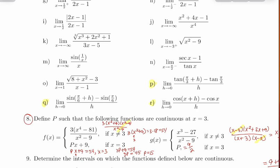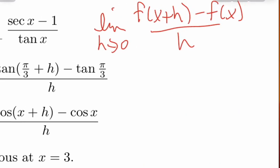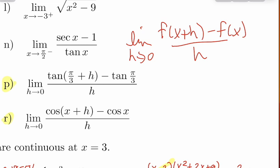You might recognize those, because the easiest way to do P, Q, and R is to recognize the formula: the limit as h approaches zero of f of x plus h minus f of x over h. Can anybody tell me what that limit is the same as? This is the derivative. So you should never do P, Q, and R using a limit. We should convert it instead to its function and then evaluate the limit.